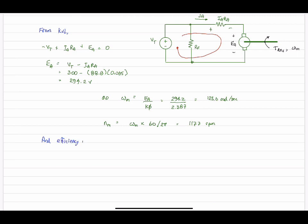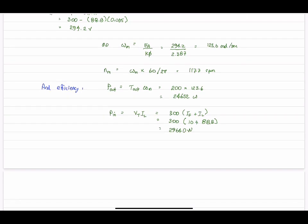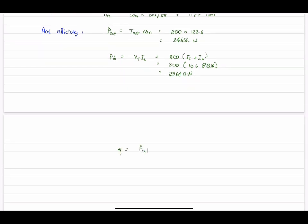So let's round it out now with efficiency. We have to calculate the power out. This is the power delivered to the load. And so that was 200 newton meters times the speed that we just calculated, so 24,652 watts. On the electrical side, the total power in delivered by that source is the voltage 300 times the total current, which is the sum of the armature and the field current. And so the efficiency then is just the ratio of the two of these times 100 percent. So this comes out to 83.2 percent efficiency.